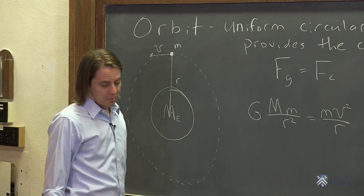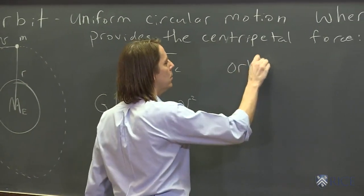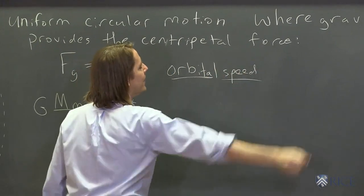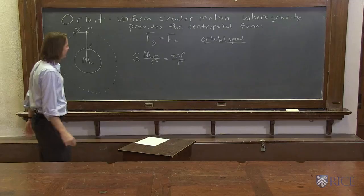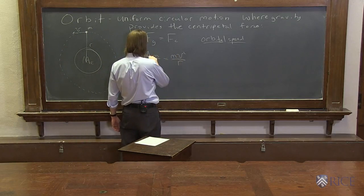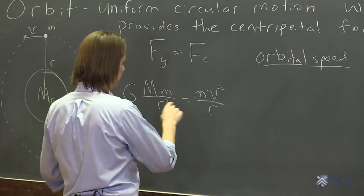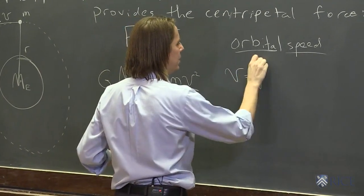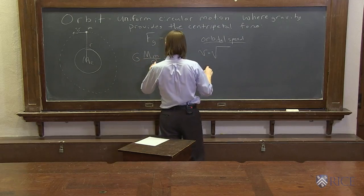So you might ask a few things. You might ask, what's the orbital speed? How fast is this thing going around? If we find out it has to be going the speed of light, then orbit's probably not possible. So let's see what we get. So if we solve this for V, cancel the M's, this R, two of the R's cancel, and this R goes over here. You find that V is the square root of GM over R.